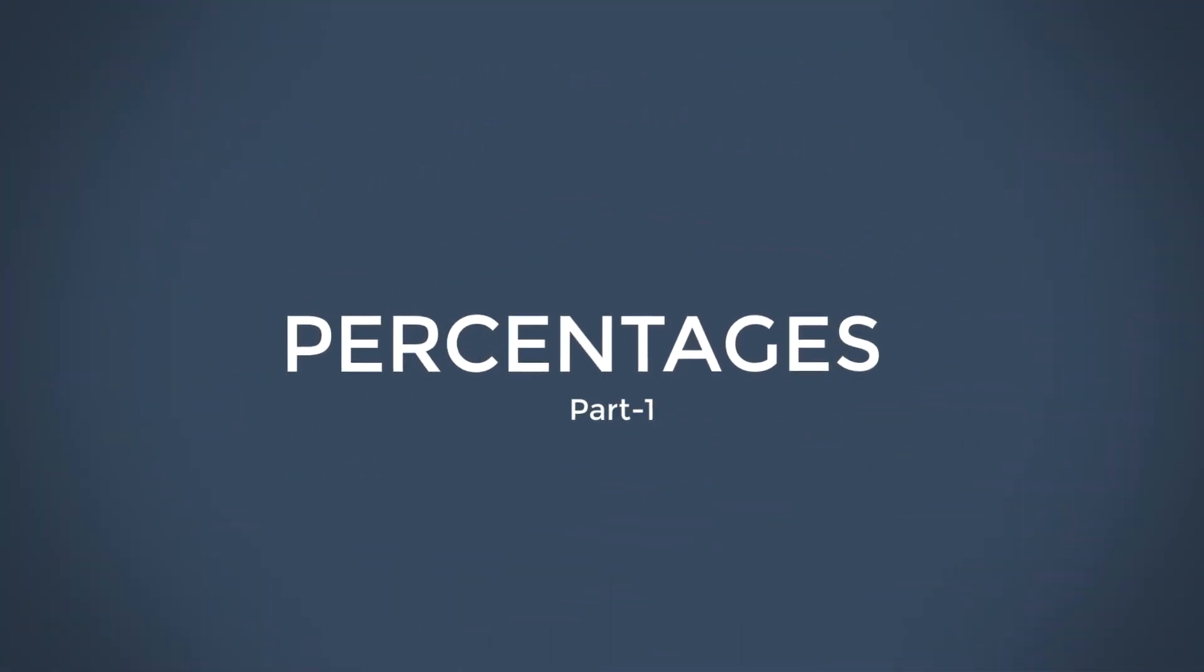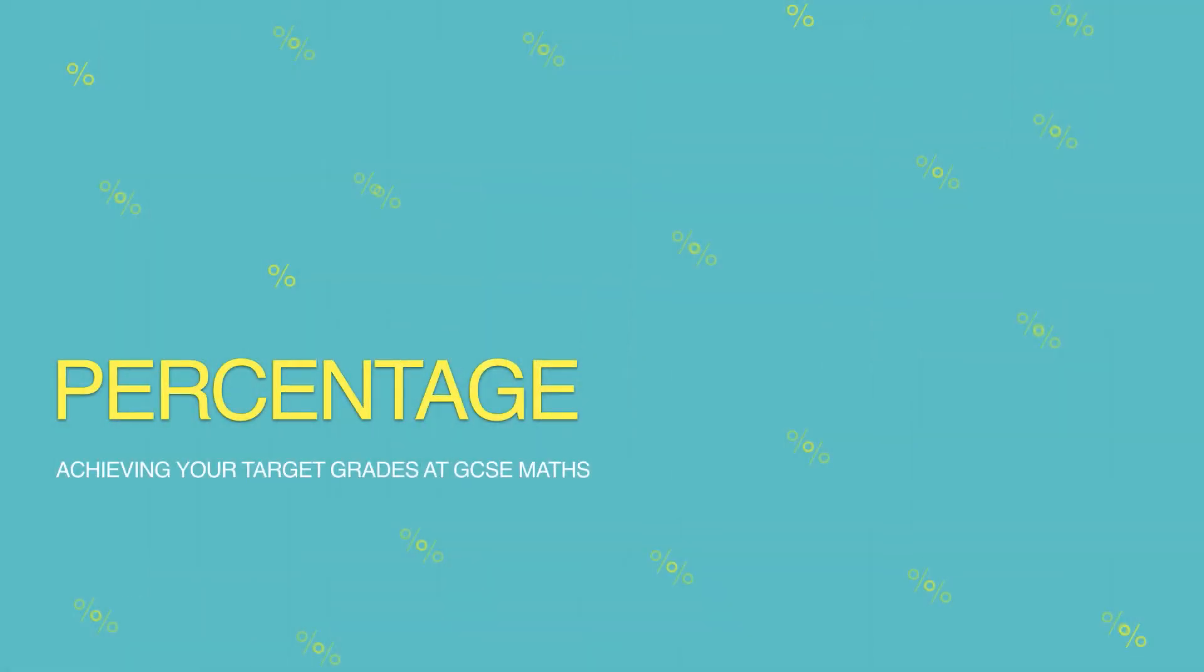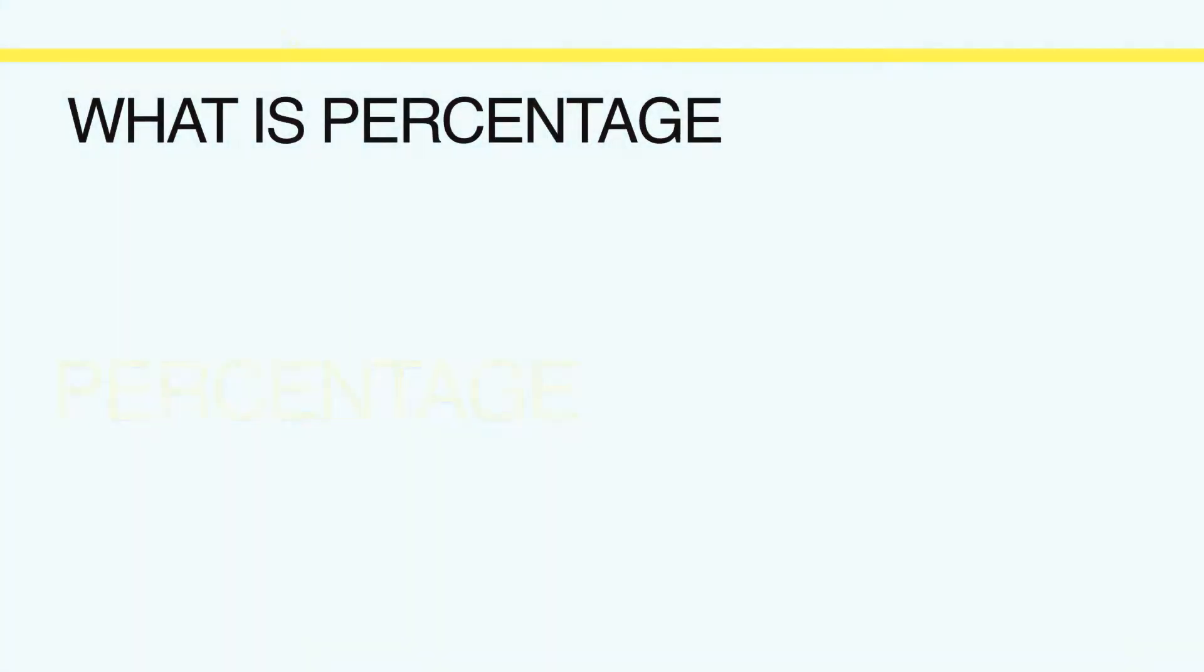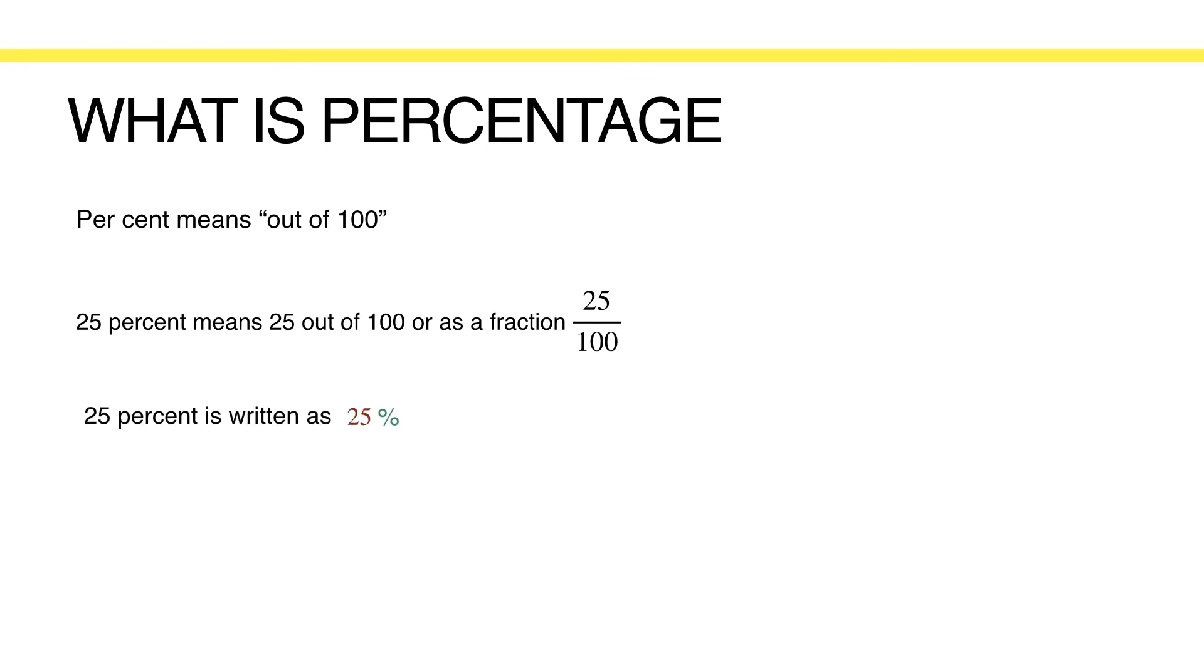Welcome. In this video, I'll show you how to find percentages of a quantity using calculator as well as non-calculator methods. Percentages are special fractions that have denominators of 100. Percent means out of 100. For example, when people say 25%, it really means 25 per hundred, or as a fraction, it's 25 over 100, which can also be written as 25 with the percentage symbol.